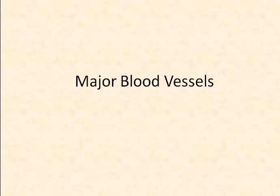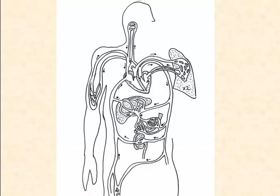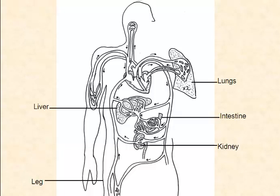In this video, we'll take a look at some of the major blood vessels. In this representation of the human body, you should be able to recognize a few major structures. First of all, the lungs — there are two, but only one is shown here — the intestine, kidney (there are two kidneys), the leg, and the liver.